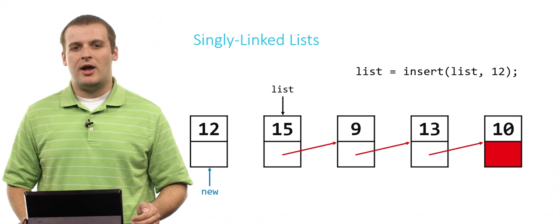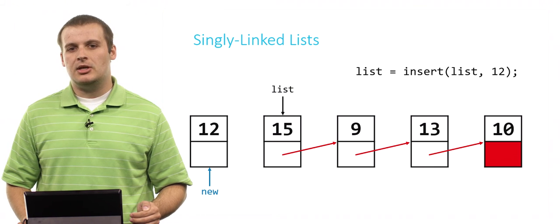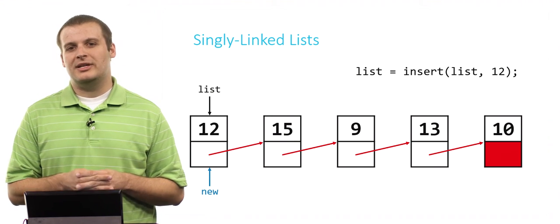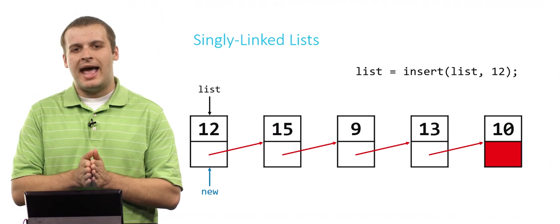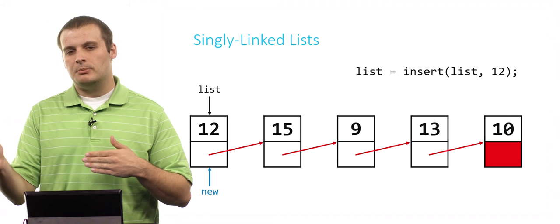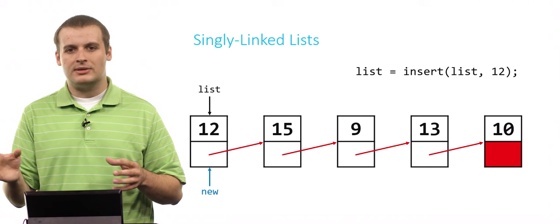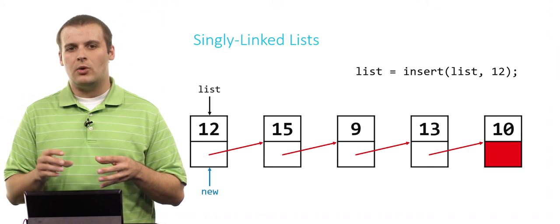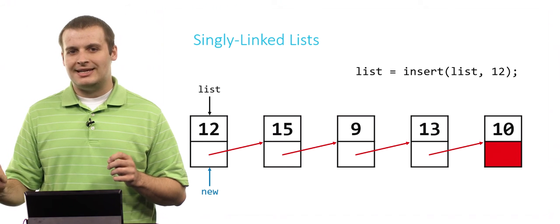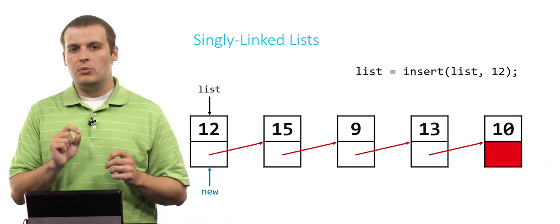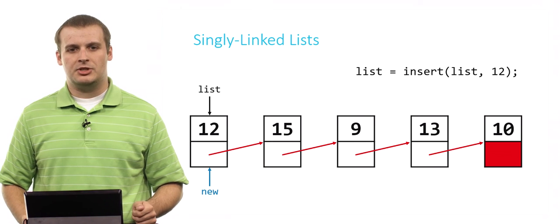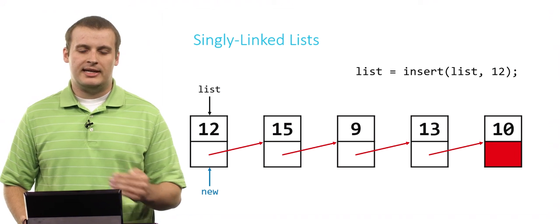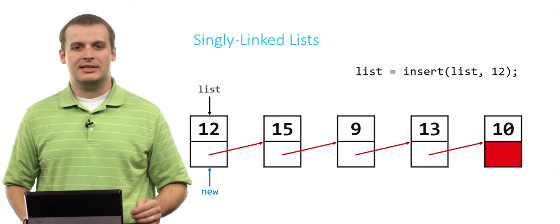The right thing to do is set 12's next pointer to the old head of the list first, then move the list pointer over. That is the correct order when working with singly linked lists — always connect the new element into the list before changing where the head is. We don't want to lose track of the head, so we make sure everything is chained together before moving that pointer. The correct order: connect 12 to the list, then say the list starts at 12.